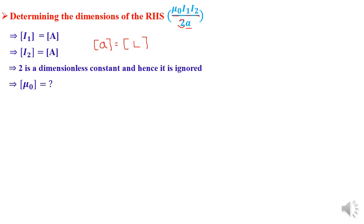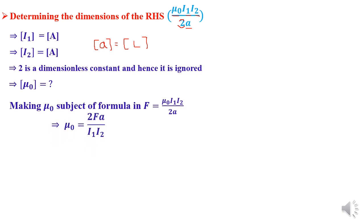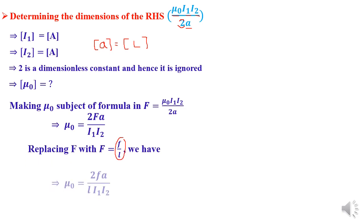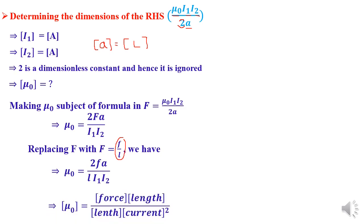To find the dimensions of μ₀, make it the subject of the formula: μ₀ equals 2FA over I₁I₂. Since capital F equals little f over little l, substituting gives μ₀ equals 2FA over lI₁I₂. The dimensions of μ₀ therefore equal the dimensions of force multiplied by the dimensions of length — since little f is force and little a is distance — divided by the dimensions of length multiplied by the dimensions of current squared, since little l is distance and I₁, I₂ are currents.